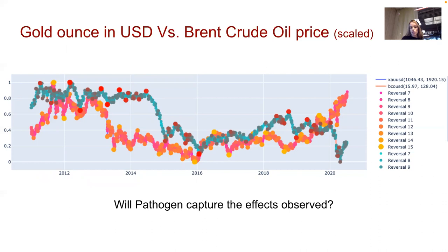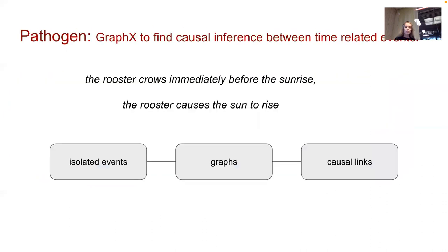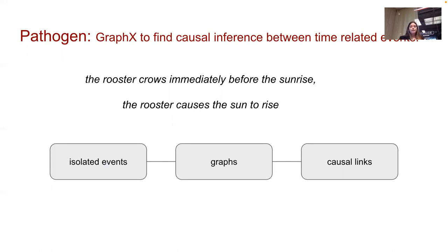The question is whether Pathogen will capture the effects we observe. Pathogen is an algorithm that won a big data championship. The Pathogen algorithm uses the GraphX library to find causal inference between time-related events. The idea is illustrated with a simple example: the rooster crows immediately before the sunrise, therefore the rooster causes the sun to rise. Having isolated events, Pathogen converts them into a graph model to look into the causal links.